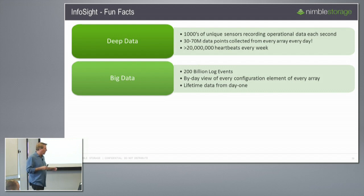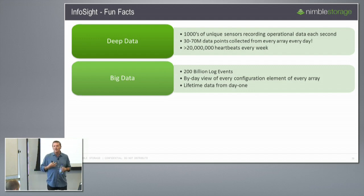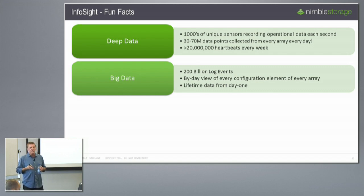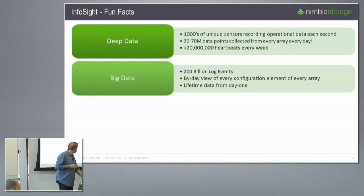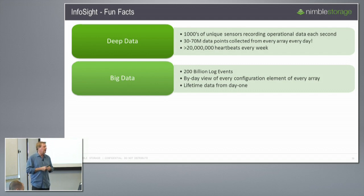From the big data perspective, this ends up being a whole lot of data. We have something like 200 billion log events — all syslog events from all these systems, various processes creating syslog events, all captured and brought back home. We have a by-day view of every configuration element on the array, so if we wanted to see how the array was precisely configured six months ago we can easily query that. From a support perspective that's extremely valuable — it's usually the first question you want to ask a customer: 'what did you change?' Wrong answer — they always say nothing.